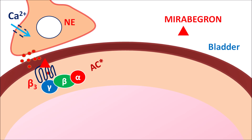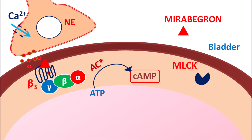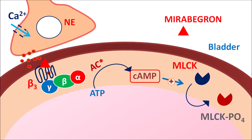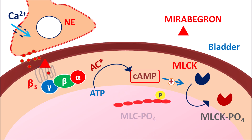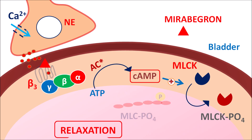Stimulation of beta-3 receptors leads to activation of the adenylyl cyclase system. Adenylyl cyclase converts ATP into cyclic AMP, an important secondary messenger. Cyclic AMP then activates protein kinase A, resulting in various cellular activities. One key role mediated through protein kinase A is inactivation of MLCK — the myosin light chain kinase, a phosphorylating enzyme required for contraction. MLCK is converted to its phosphorylated, inactive form, so MLC phosphate is not formed, resulting in smooth muscle relaxation.